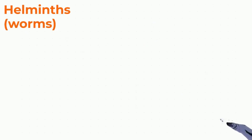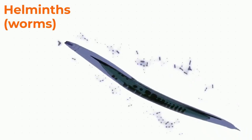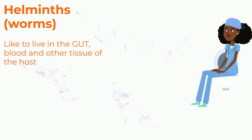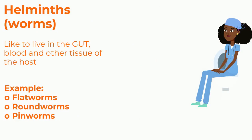Helminths is just another word for parasites that are worms. Helminths like to live in the gut, blood, and other tissues of the host. Three examples of helminths are flatworms, roundworms, and pinworms.